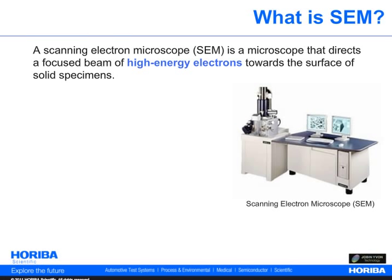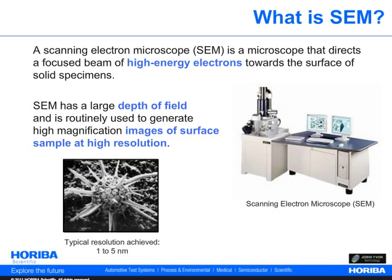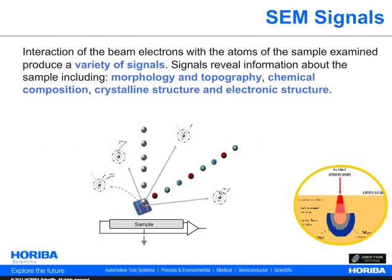Let's start with a short introduction on SEM. The scanning electron microscope is a type of microscope that images a sample by scanning it with a high-energy beam of electrons. The SEM has a large depth of field and can produce very high-resolution images of a sample surface, revealing details less than 1 nanometer in size. The electrons' interaction with the sample atoms makes the sample produce a large variety of signals containing information about the sample surface.